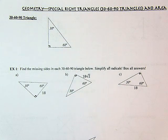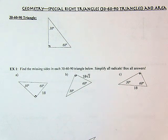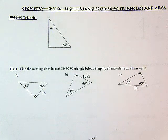Today we are looking at the other type of special right triangle — a 30-60-90 triangle — as well as area of regular polygons.